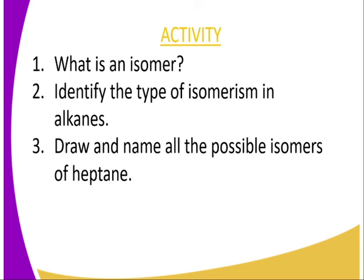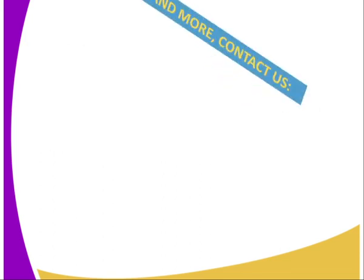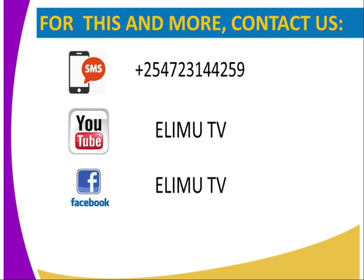Did we get the concept of this lesson? Let's try to answer the following questions: What is an isomer? Identify the different types of isomerism in alkane. And the last question: draw and name all the possible isomers of heptane. You can also refer to Chemistry Student Book 3 as well as Patel. You can follow us or send us an SMS through the line on your screen, visit us on YouTube or Facebook at Elimu TV, or tweet us at Elimu TV underscore KE. I'm your tutor, Mr. Mungi Francis. Thank you for watching, and do pay attention for the lesson that follows.